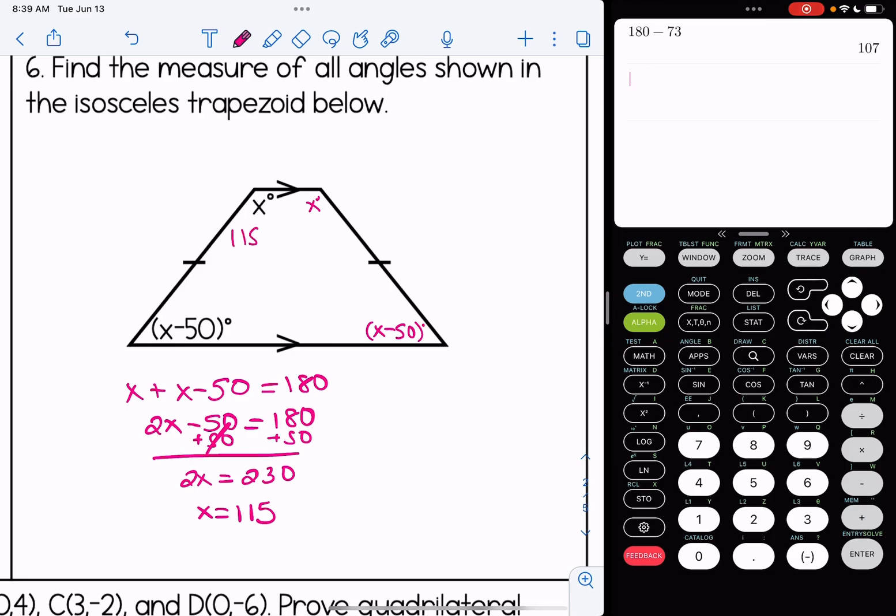That gives me the measure of the two top base angles. To get the bottom two, plug 115 in, and I'm going to get 65 for each of those. You can always check your work by making sure that all four angles in the trapezoid add up to 360.